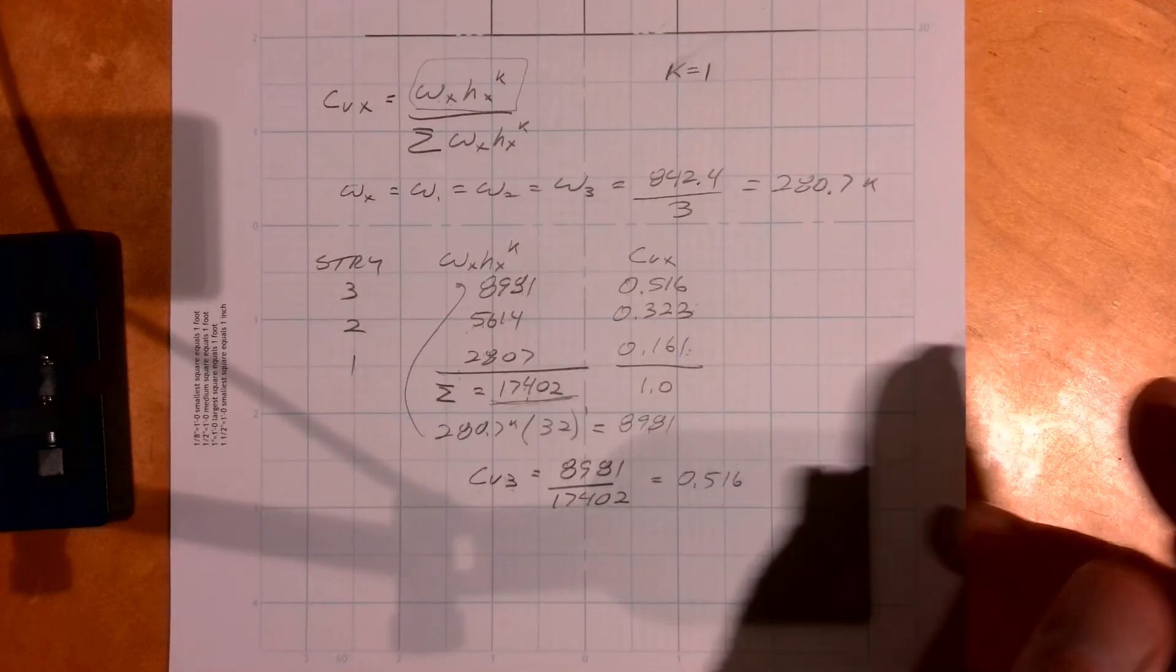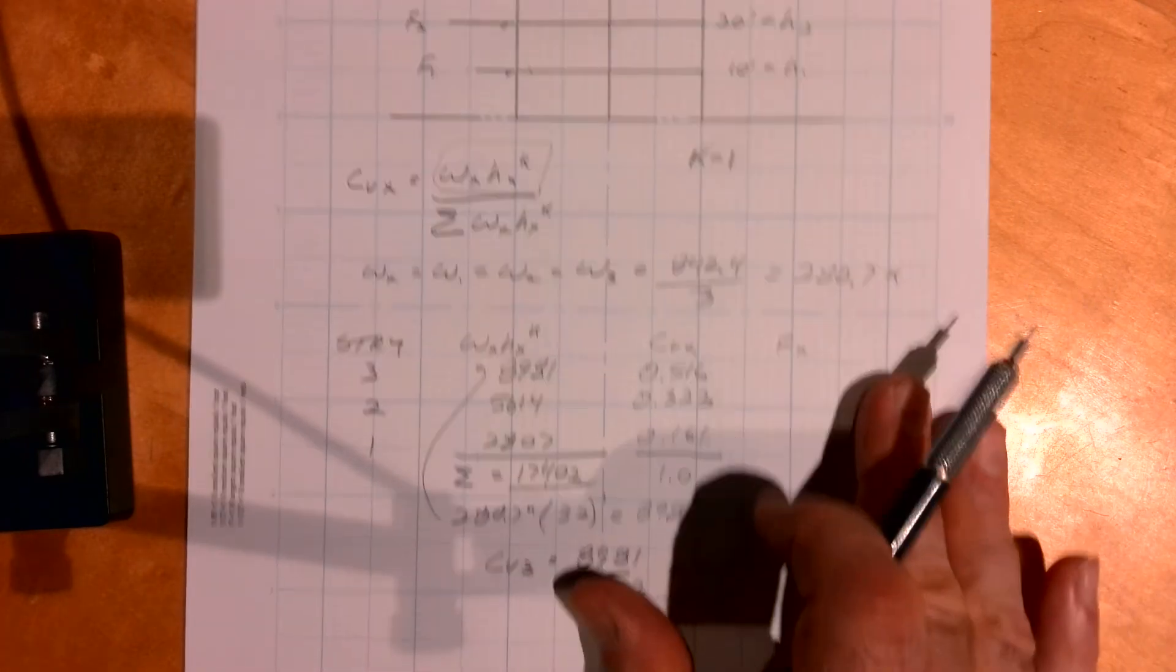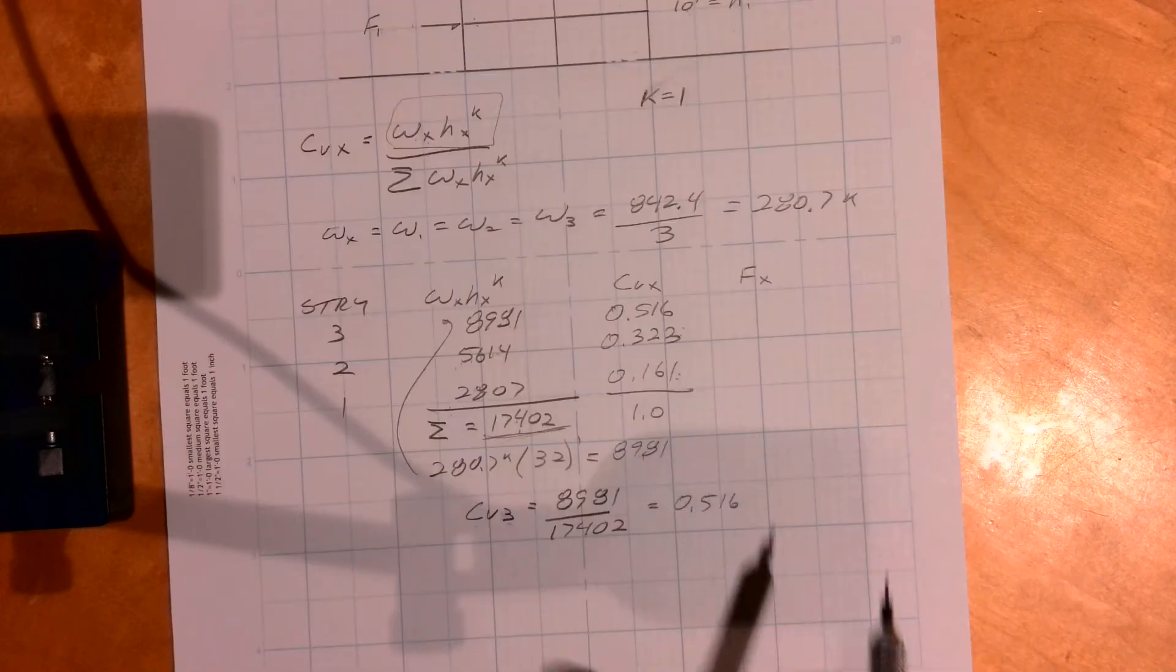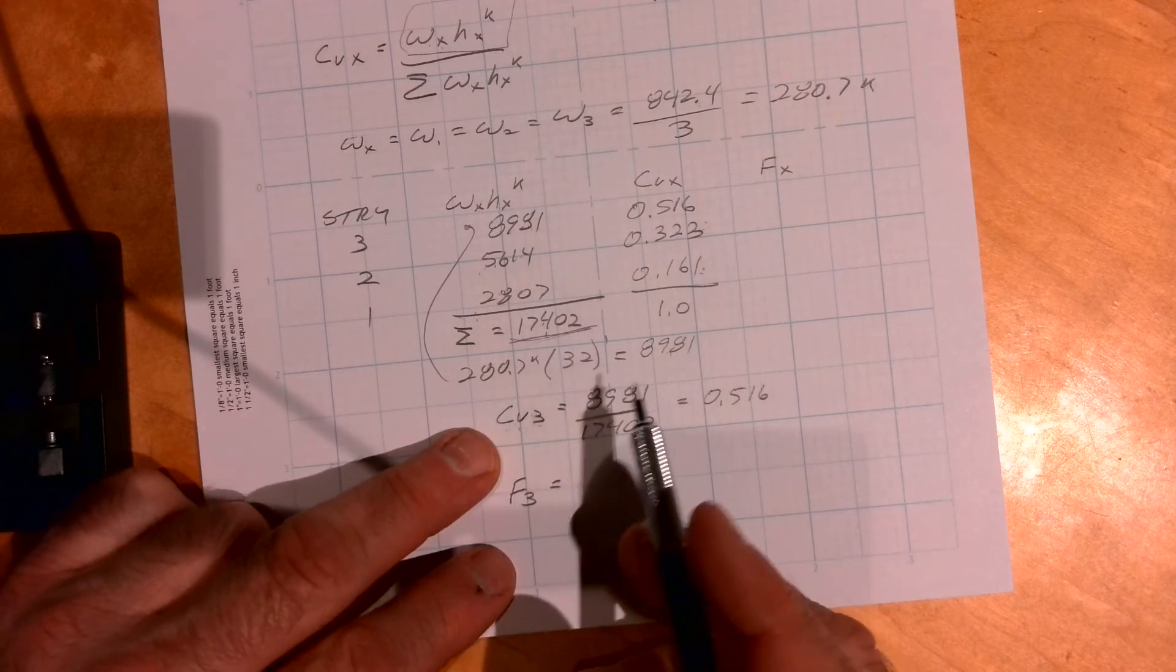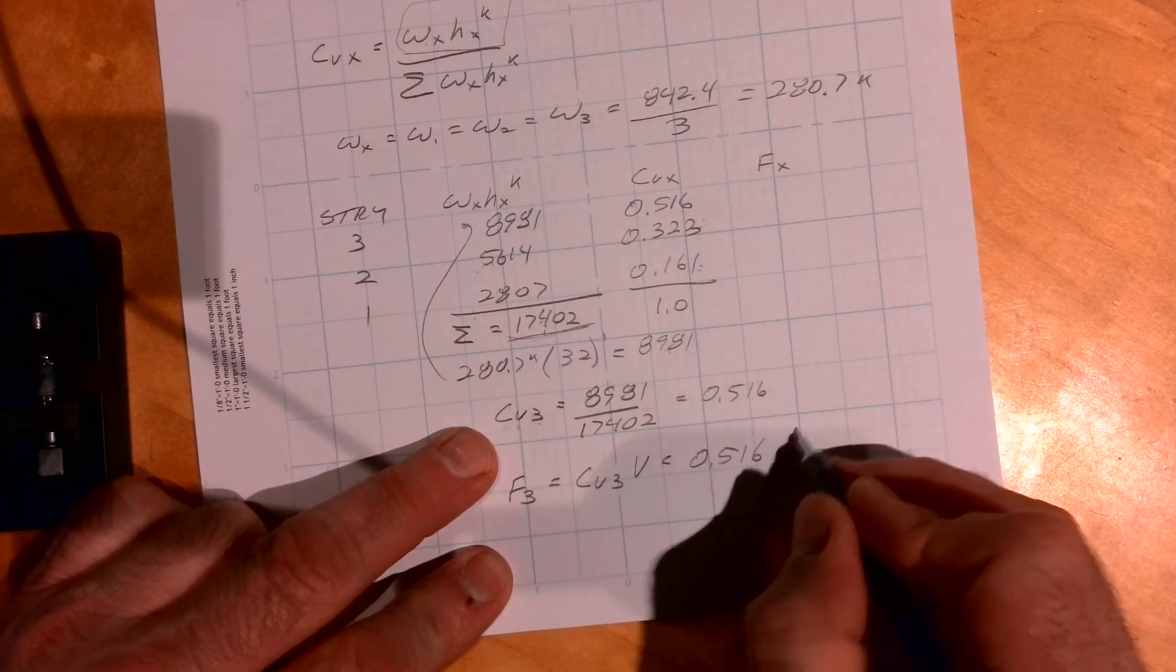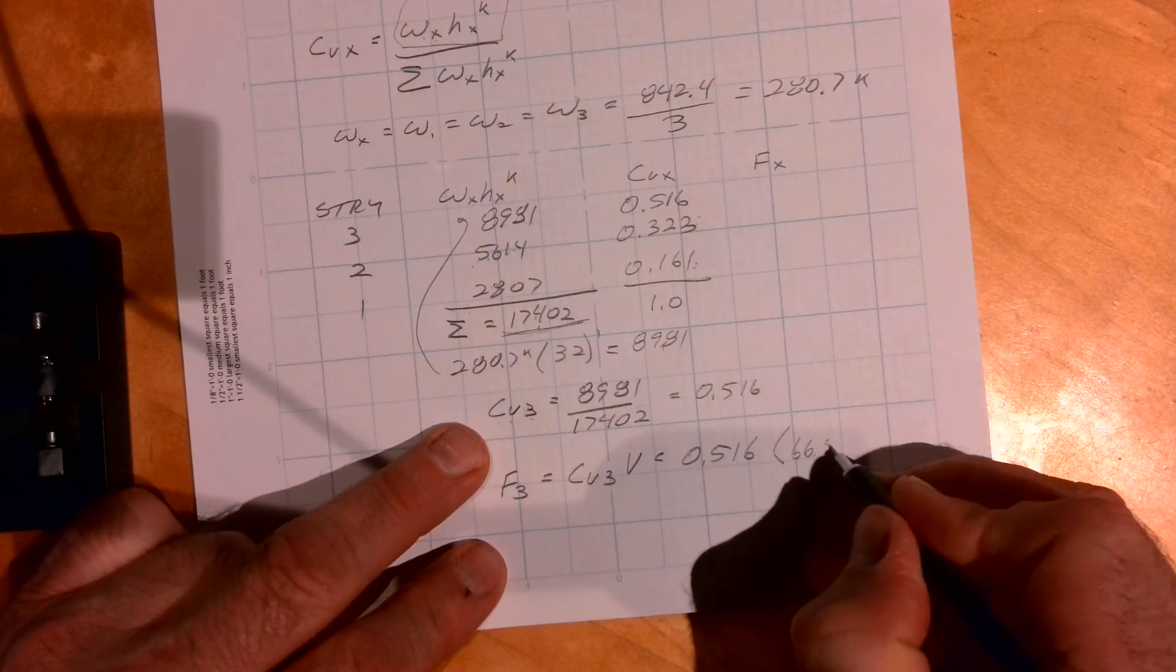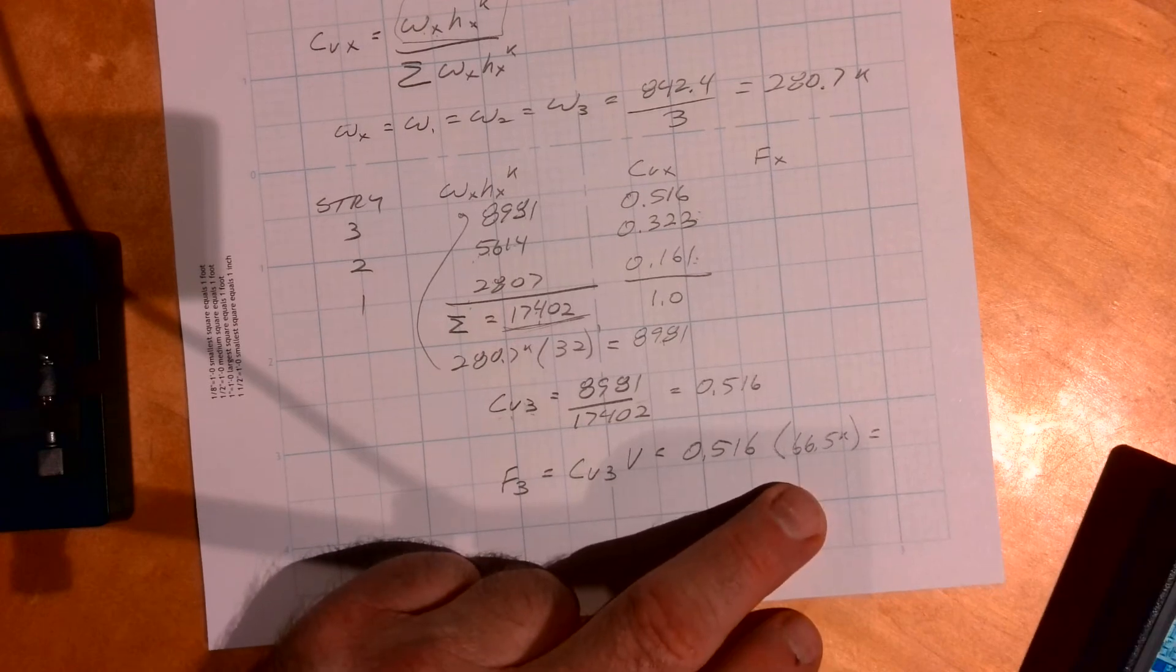Okay, then the final step is just to take the, to find the story force, so F1, 2, and 3. And to do that, let's do F3, we would take CV3 times the base shear. So in this case it's CV3 times V, so 0.516 and the base shear here was 66.5 kips.